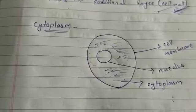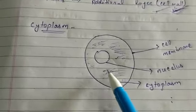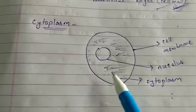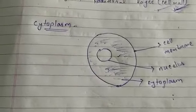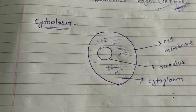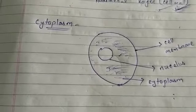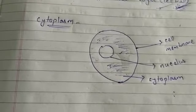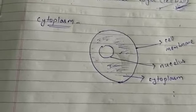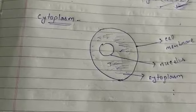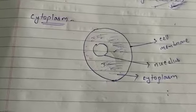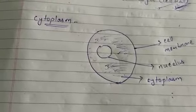The other cell organelles include mitochondria, endoplasmic reticulum, lysosome, centrosome, ribosome, Golgi apparatus, and vacuoles. We will study about these organelles, but before that we will first see what is the nucleus.